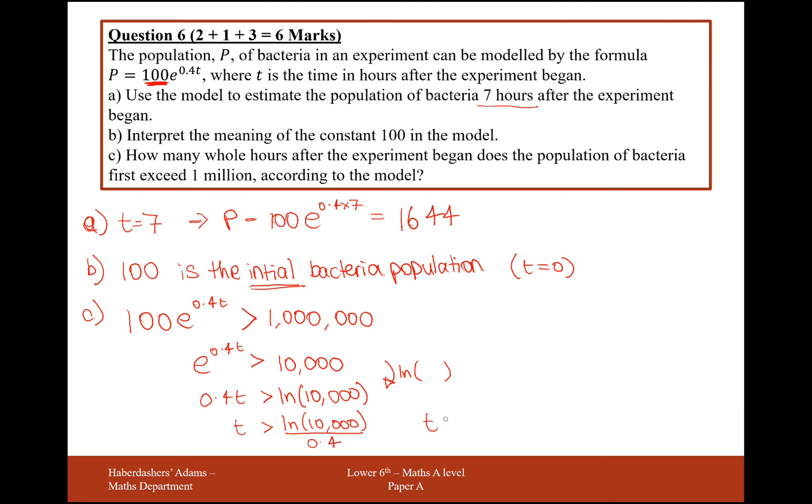T needs to be greater than LN of 10,000 over 0.4. And this is going to give us an answer of T will have to be 24 hours, greater than or equal to 24 hours. So really, this isn't equal to. So by the time we get to 24 hours, the model will have exceeded 1 million population of bacteria. You can check your answer by plugging 24 back into your equation. You should get a number that comes out to be more than a million, and if you were to put 23 in, you should get a number that's less than 1 million. Okay, that's great. Six marks.